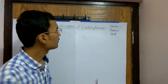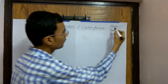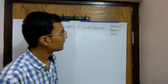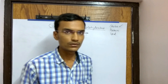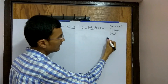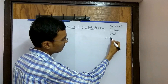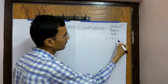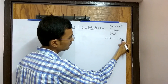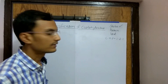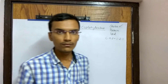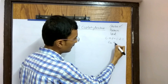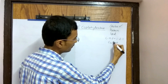Today we are going to discuss the classification of carbohydrates. Carbohydrates are generally composed of carbon, hydrogen, and oxygen in the ratio of 1:2:1, and the general formula of carbohydrate is CnH2nOn.